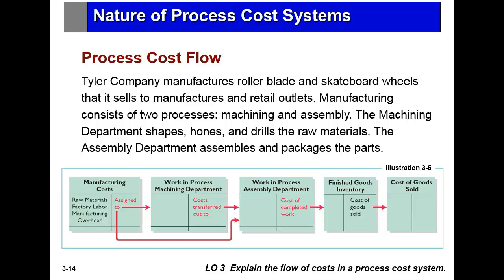Manufacturing costs consist of two processes: machining and assembling. The machining department shapes, hones, and drills the raw materials, and then the assembly department assembles and packages the parts.